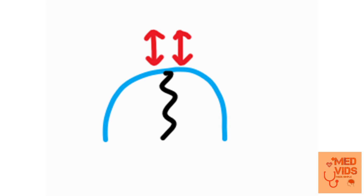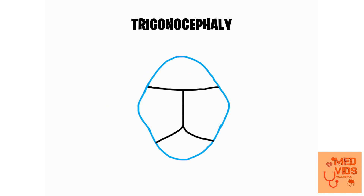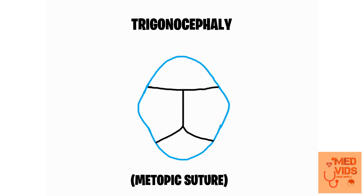The first abnormality is trigonocephaly, caused by very early fusion of the metopic suture. Normally the metopic suture is expected to fuse at about two months of age, but if it fuses very early, we can have trigonocephaly, in which the forehead of the child looks like a triangle.